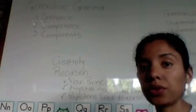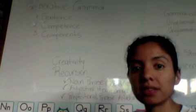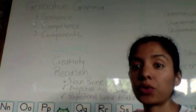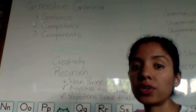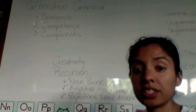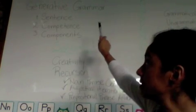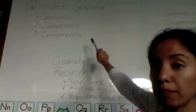I'm going to talk to you about Generative Grammar. If you are capable of producing well-formed sentences and rejecting ill-formed sentences, this is referred to as Generative Grammar. In Generative Grammar, we look at three elements: the sentence, competence, and components.